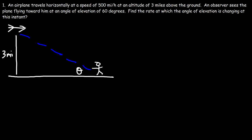So this is the angle of elevation, theta. And the plane is traveling forward at a speed of 500 miles per hour. We need to determine the rate at which the angle of elevation is changing at this instant. So that is dθ/dt. That's what we need to determine. So let's call this y, x, and z.